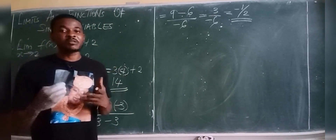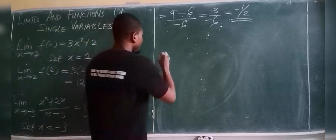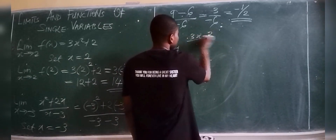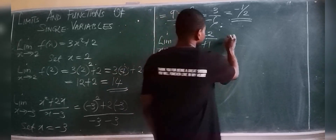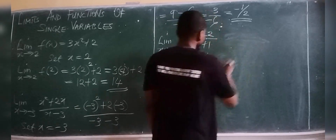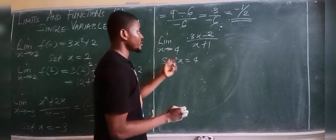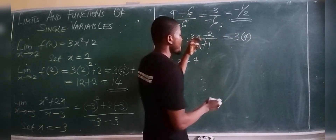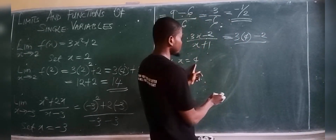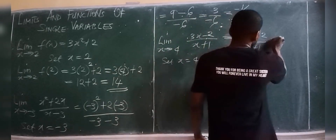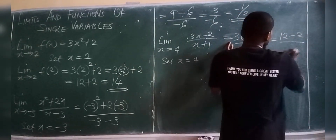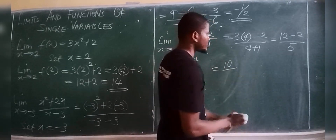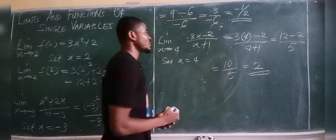You keep trying by substitution until the limit fails before using the next method. For example, evaluate the limit as x approaches 4 of (3x − 2) / (x + 1). Set x = 4: numerator is 3(4) − 2 = 12 − 2 = 10, denominator is 4 + 1 = 5. So the answer is 10/5 = 2.